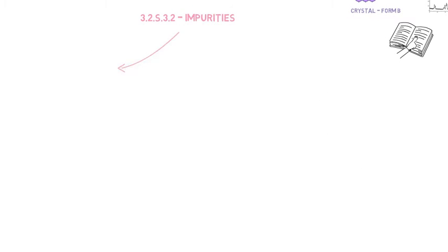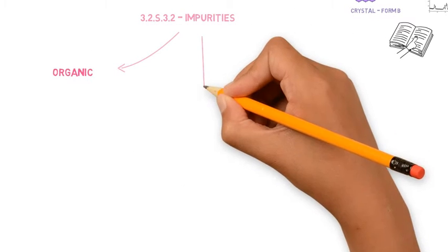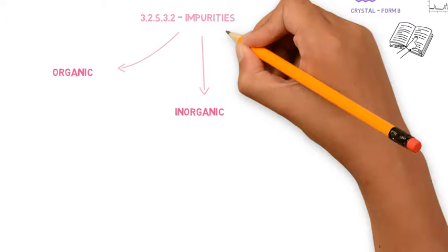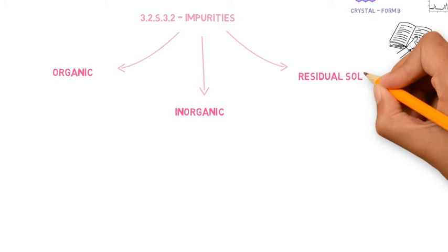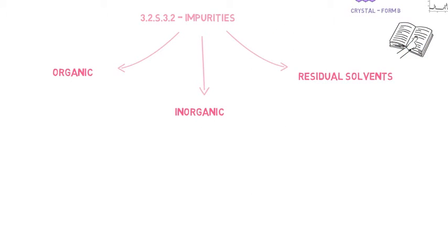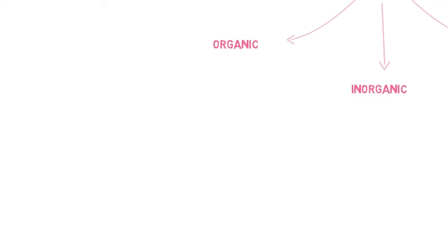After that, the impurities section starts. Impurities are divided into organic, inorganic, and residual solvents, and for each one, there are ICH guidelines which help us understand the limits which are acceptable.